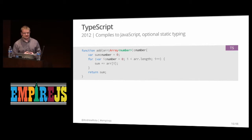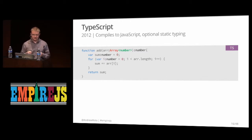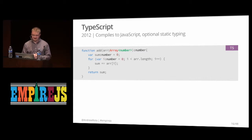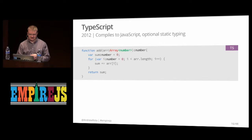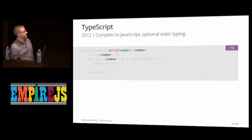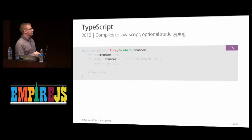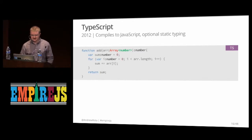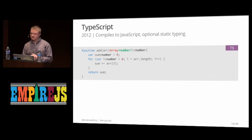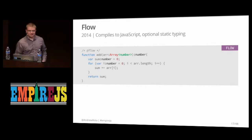A couple years later we got TypeScript, and this was kind of a game changer. TypeScript really emphasized that types were something developers wanted and that they were useful. It implemented static typing in a way that was incredibly helpful and easy to use. Every point at which you have data — a variable, an argument, a return value, or an object — you can specify what the type should be. This is optional static typing, often referred to as gradual, meaning you don't need to type everything — you only type what's useful.